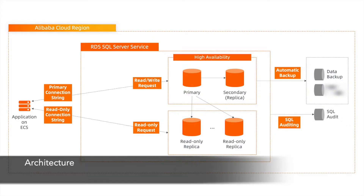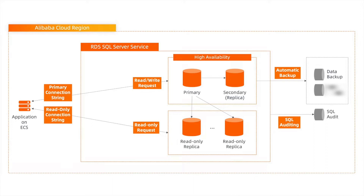RDS SQL Server High Availability instance includes a primary and a secondary replica. And to handle more heavy read workloads, you can create one or more read-only replicas as a read-only instance.